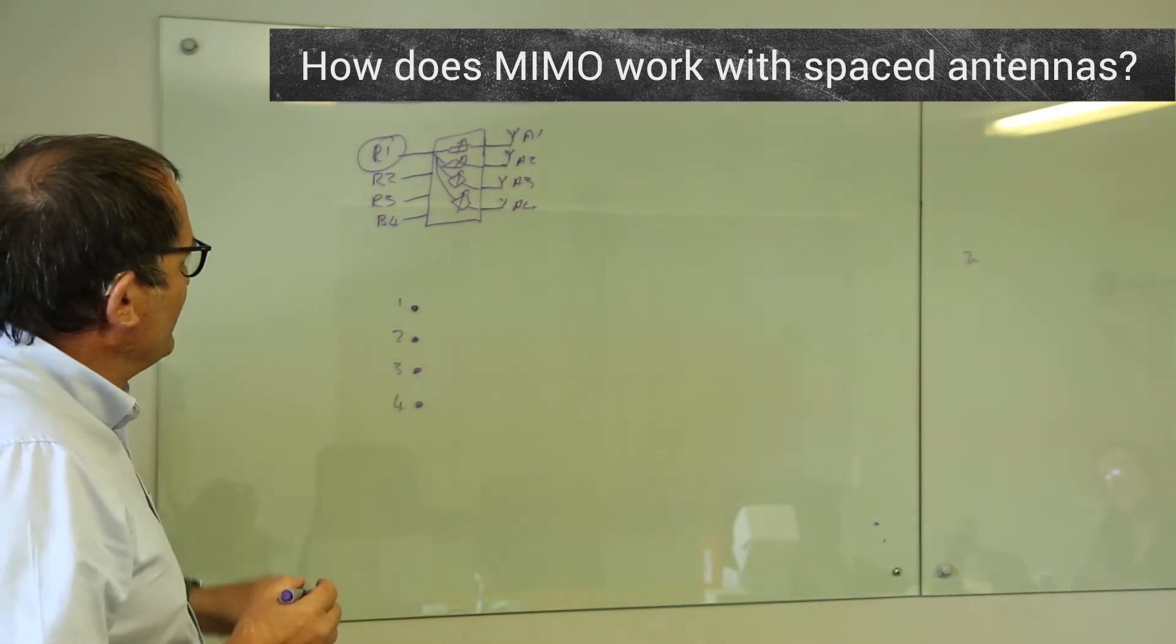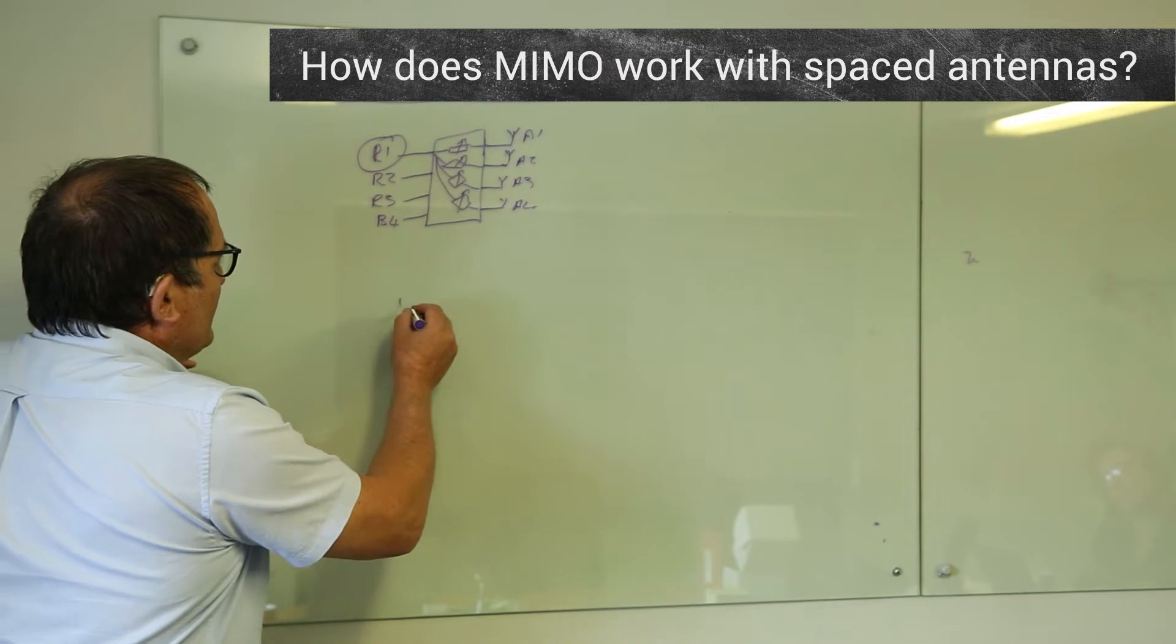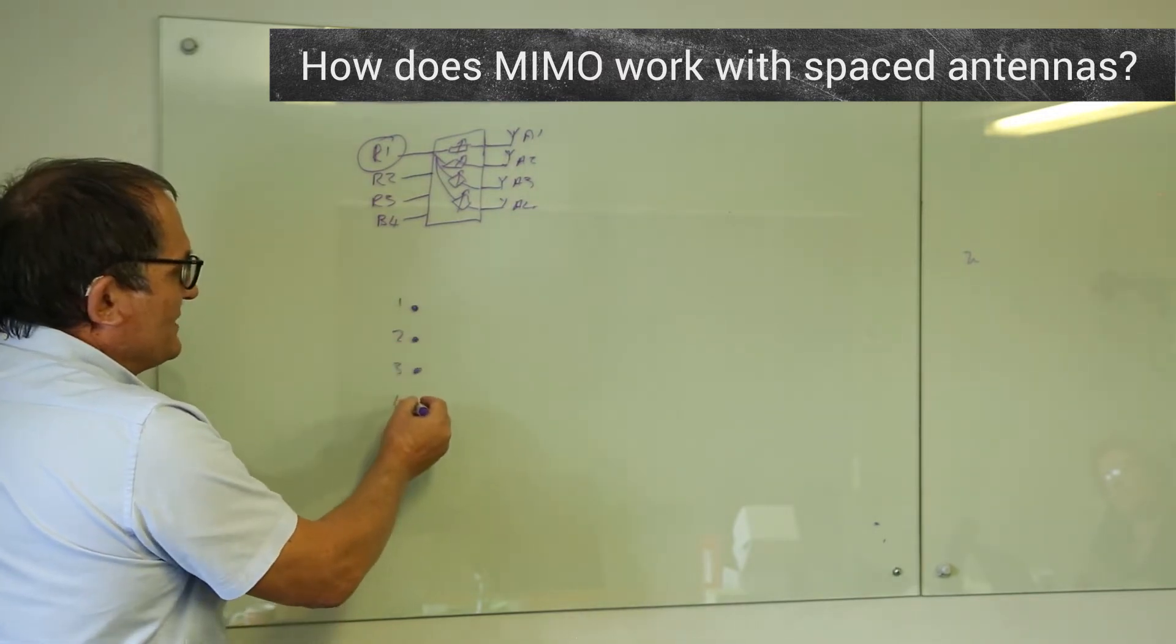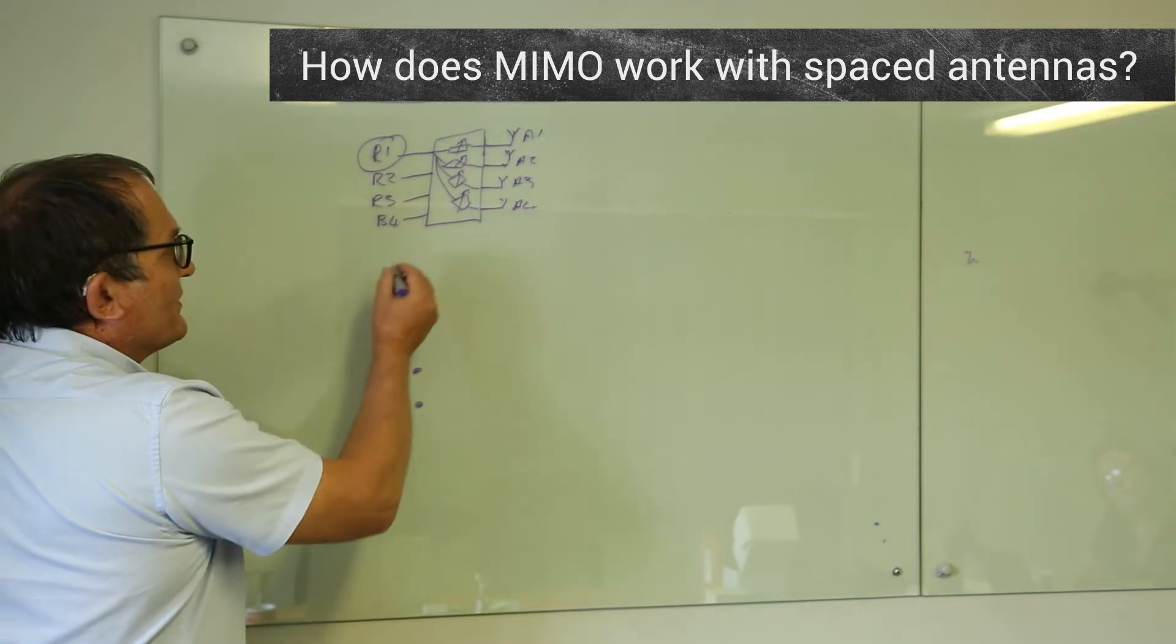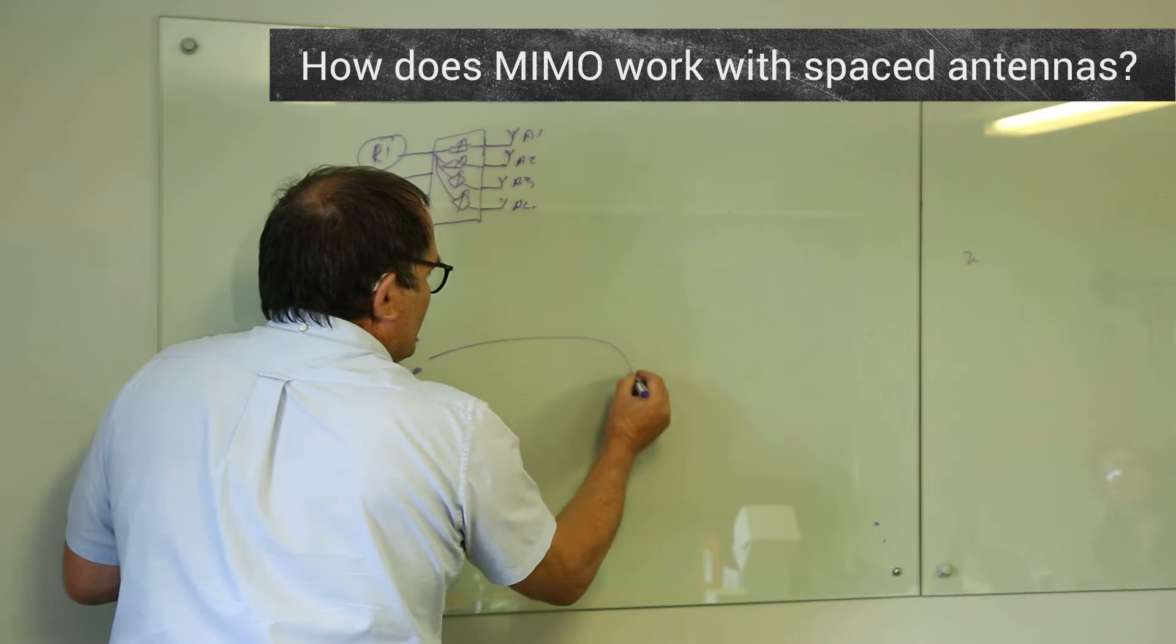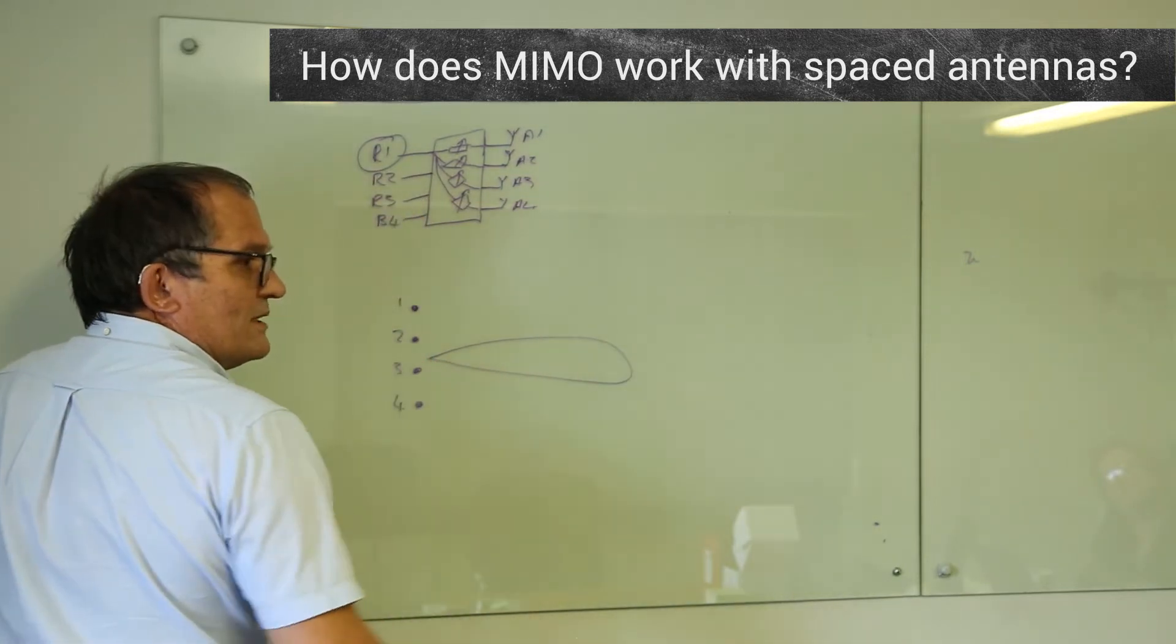Now what happens? The magic of arrays are that if you connect them, and this has been done for years and years, if you connect them with the same length of cable, in phase, in other words all of these are zero, you create a beam that looks like this that points forward.